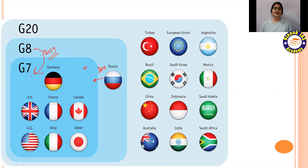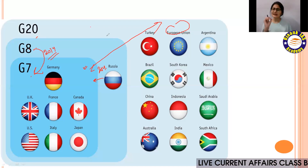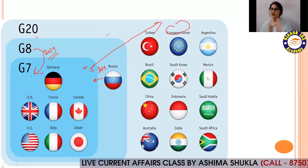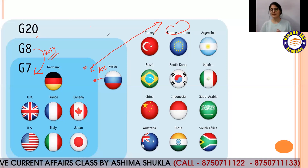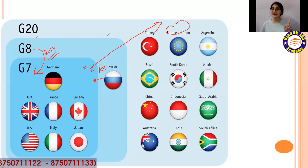G20 includes G7 countries plus Turkey, European Union, Argentina, Brazil, South Korea, Mexico, China, Indonesia, Saudi Arabia, Australia, India, and South Africa. The European Union has a special relationship with G7 — it is a permanent observer, attending every G7 meeting on a regular basis. It is not a full member but has a very important role in G7 meetings.